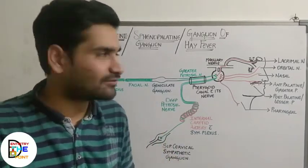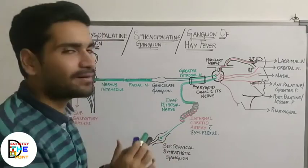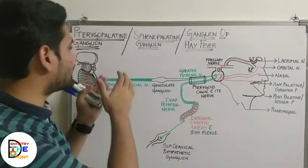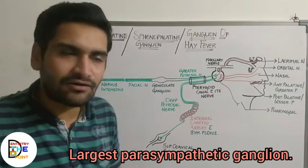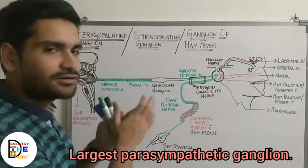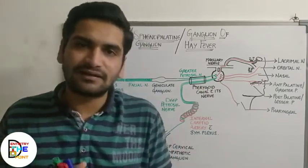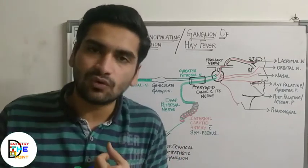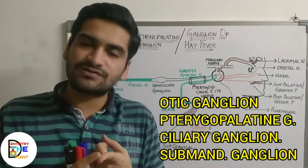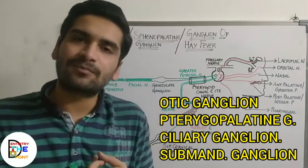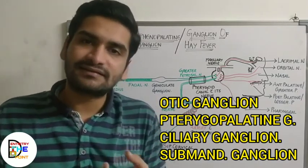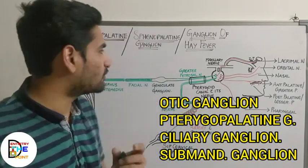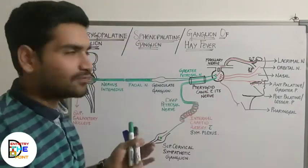The pterygopalatine ganglion is the largest parasympathetic ganglion among the four parasympathetic ganglia. The four parasympathetic ganglia are: first is the otic ganglion, which we have already studied; second is the pterygopalatine ganglion; third is the ciliary ganglion; and the last one is the submandibular ganglion. Among these four, this is the largest parasympathetic ganglion.